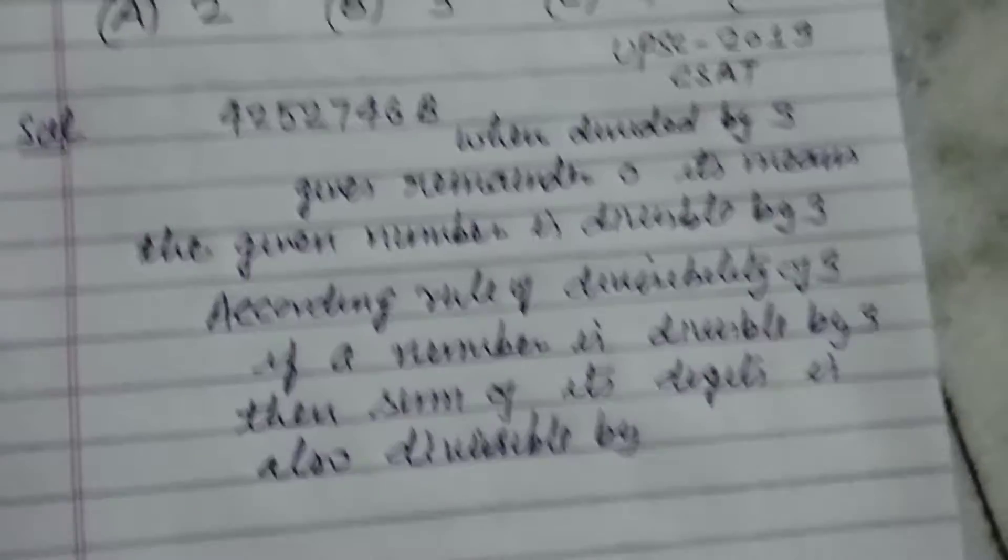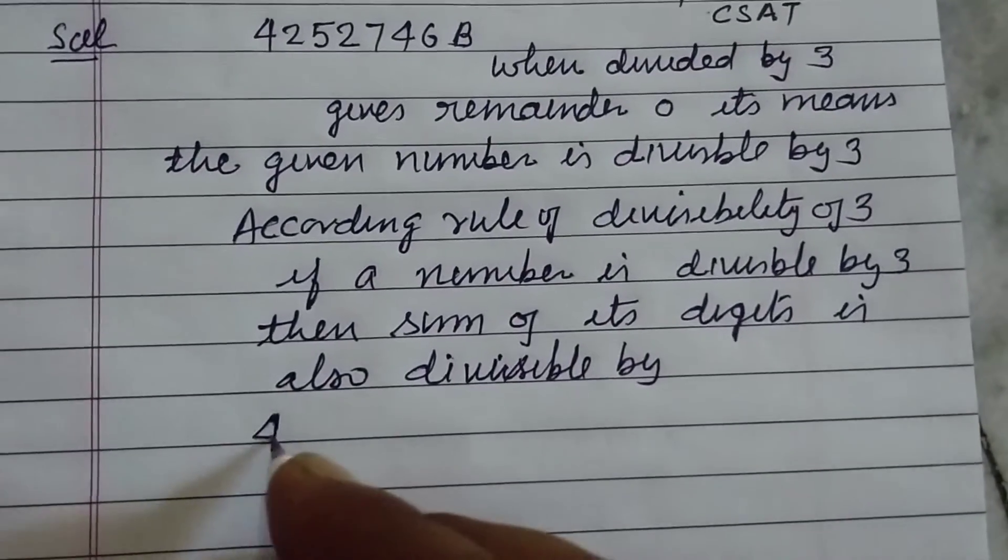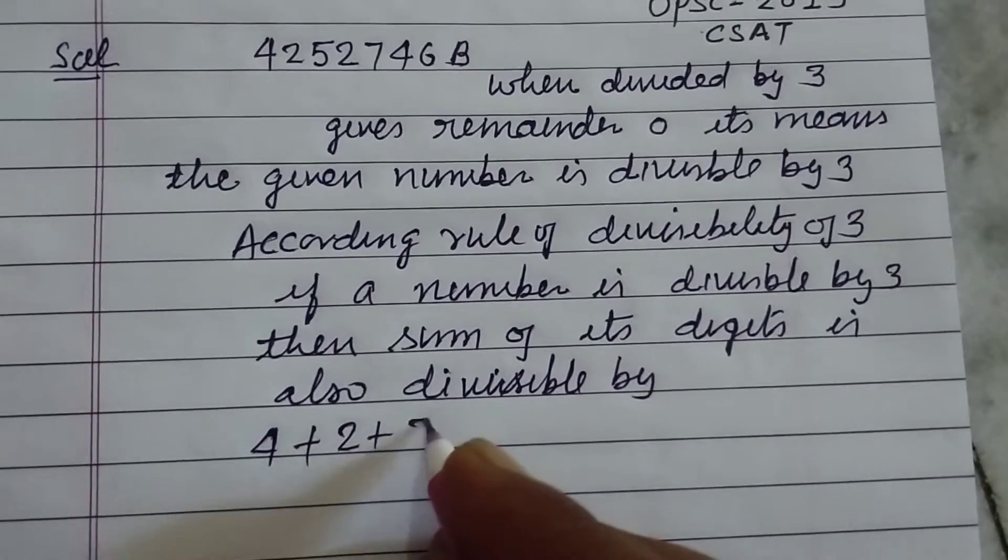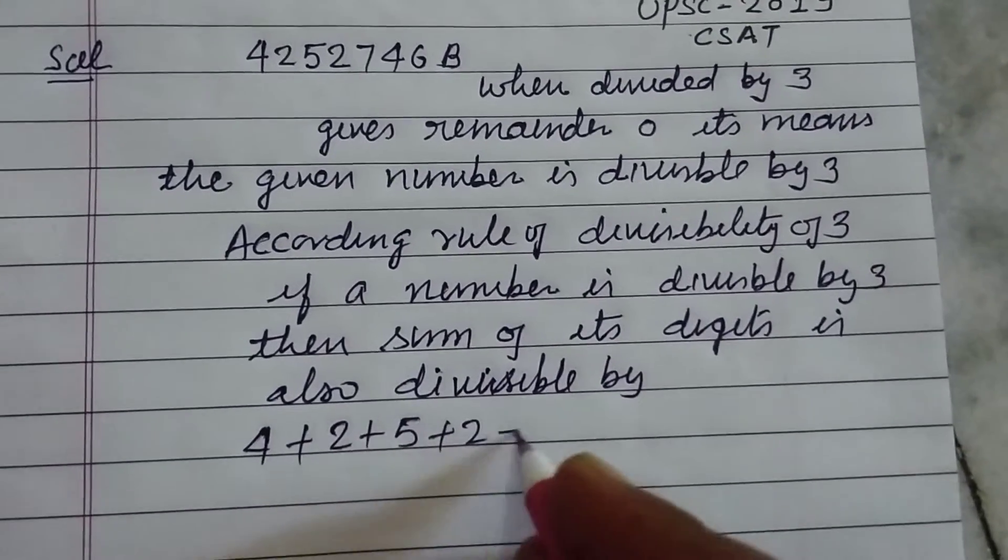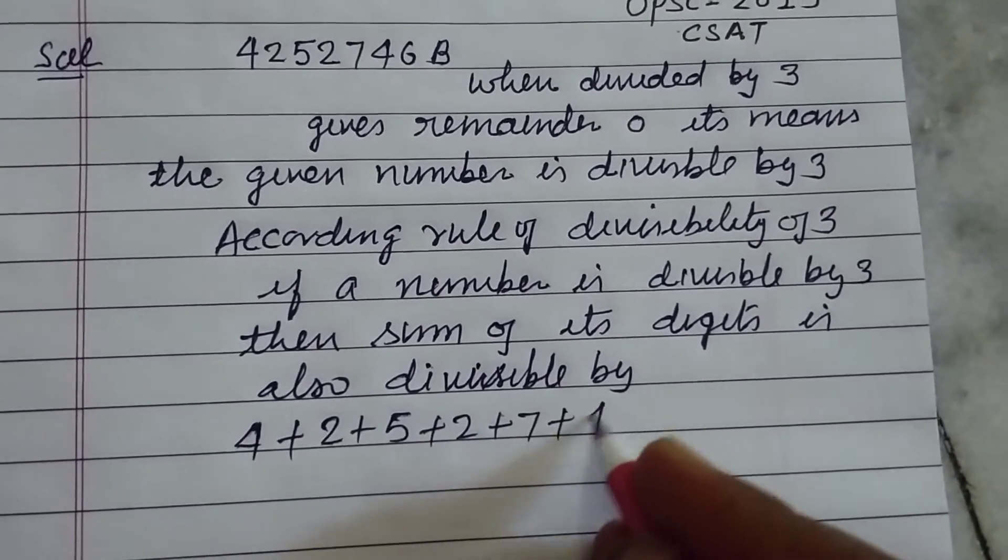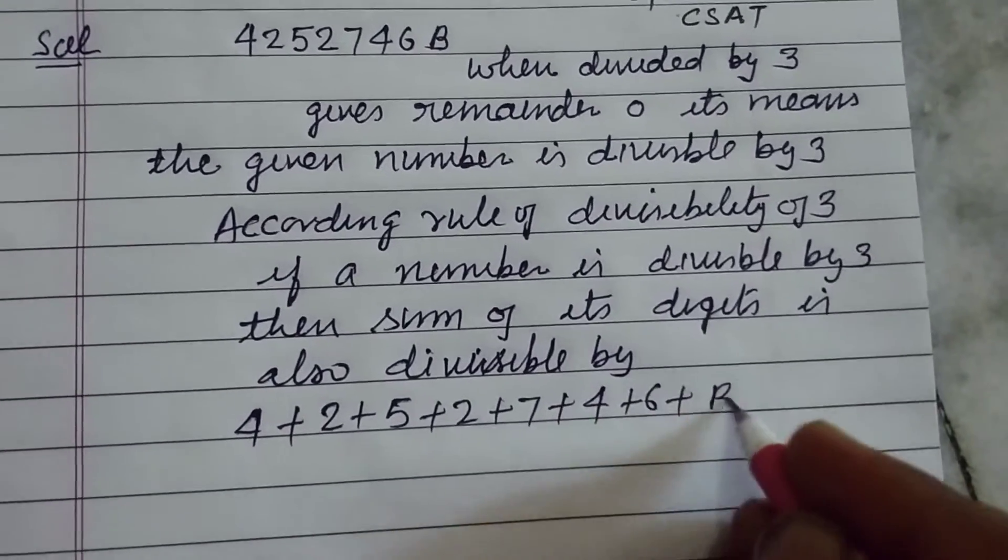So we add the digits of the number: 4 plus 2 plus 5 plus 2 plus 7 plus 4 plus 6 plus B.